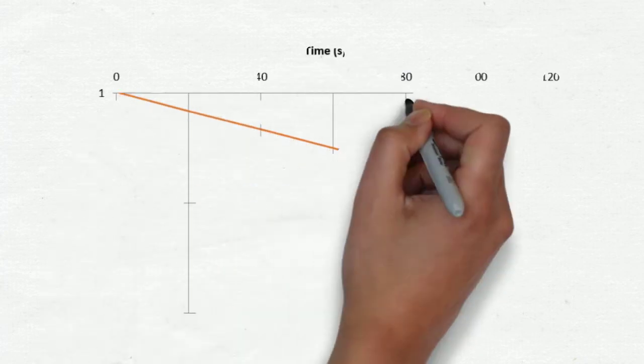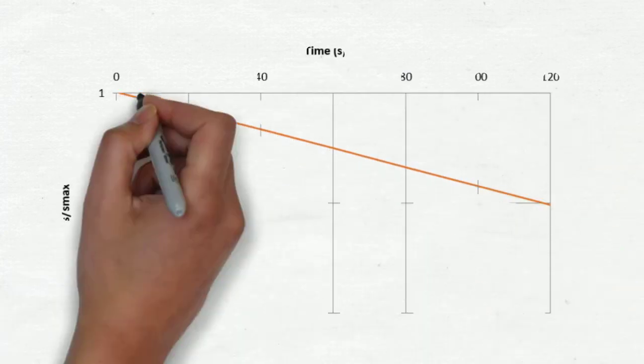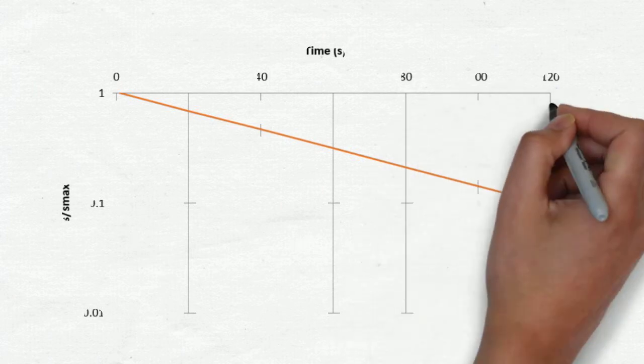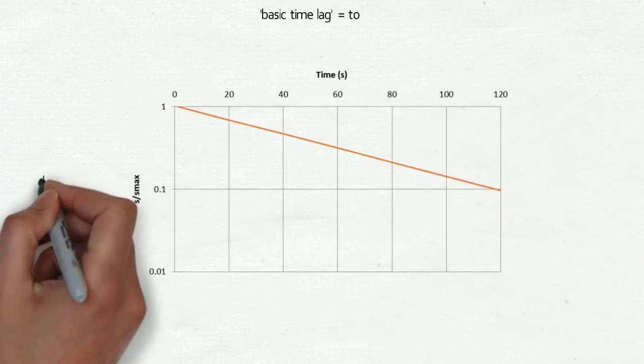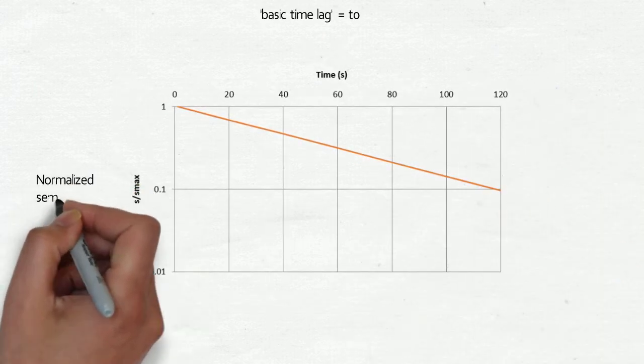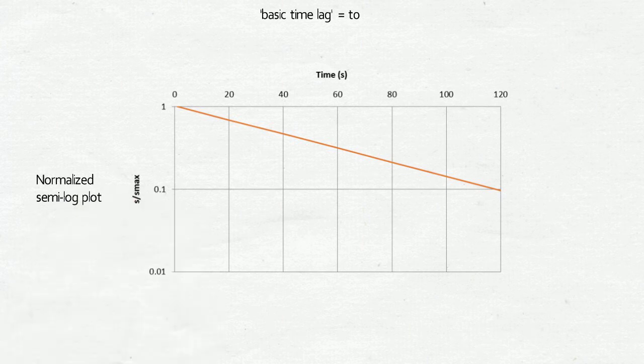To do this, we first recalculate drawdowns as a fraction of the maximum drawdown. Drawdown will now plot as a series of values from 1 to 0. A value of 1 corresponds to the maximum drawdown, and a value of 0 corresponds to no drawdown or static conditions.